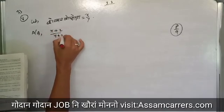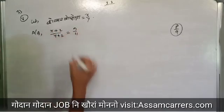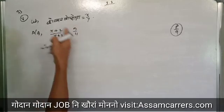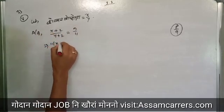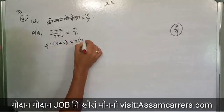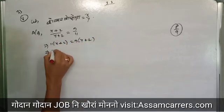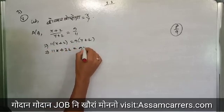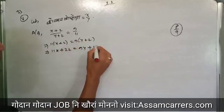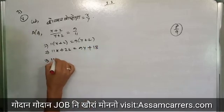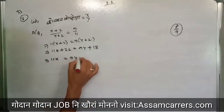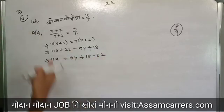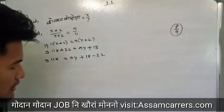x plus 2 and y plus 2 is equal to 9 by 11. So 11x plus 2 is equal to 9y plus 2, so 11x plus 22 is equal to 12. Here we have 18, nine y plus 92. So 11x is equal to 9y plus 18 minus 22.